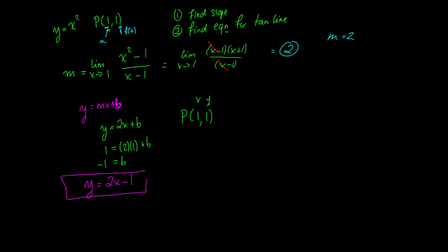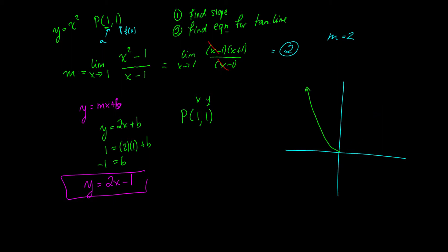If you graph this equation, x² looks like a parabola going up. Here is point (1,1).